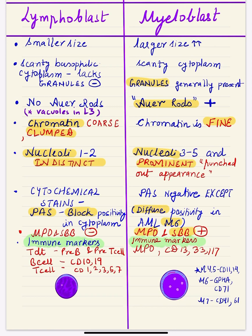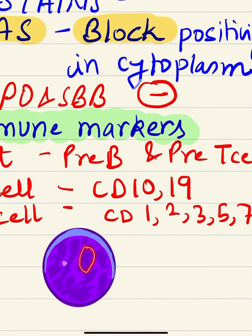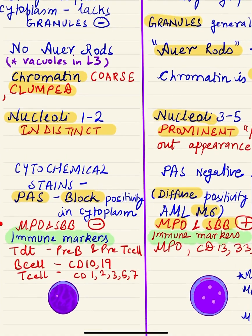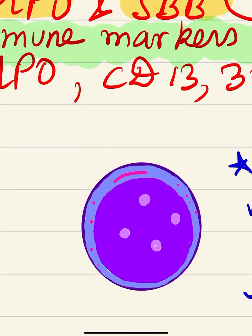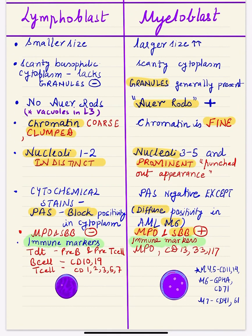If the myeloblast is undifferentiated or minimally differentiated, we may not be able to detect granules or Auer rods on morphology, and immunophenotyping is needed to confirm it is a myeloblast. Regarding the nucleus, the chromatin of the lymphoblast is clumped — coarse clumped chromatin is seen. In contrast, the chromatin in the myeloblast is fine and uniformly distributed with no clumping. This is another important differentiating point.